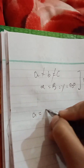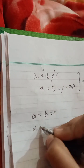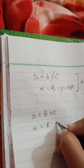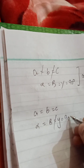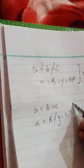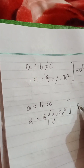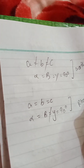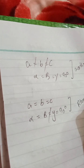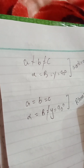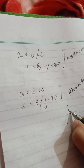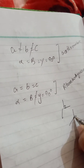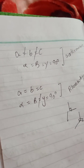For the fourth one: when a = b = c and alpha = beta = gamma but gamma ≠ 90°, we are calling that rhombohedral. The angle is always not 90 degrees in this case.